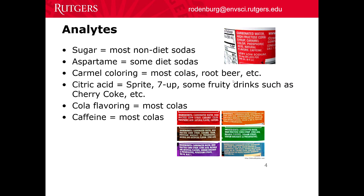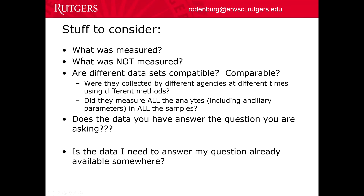Some final thoughts. Whenever you're doing this, you always have to consider what was measured — what kind of data do you have to submit to the model — and it's always important to think about what was not measured, what you wish they had measured. If you have many different sources of data, ask yourself: are they compatible? Can you combine them into one dataset and run them together? Are they comparable? Often there's a bias between one method or another. With environmental data, we frequently deal with data collected by different agencies — EPA, NOAA, Army Corps of Engineers — at different times using different analysis methods.